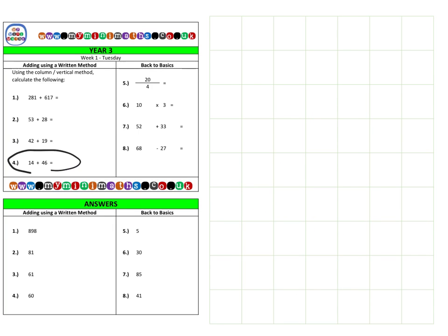And finally today, we're going to look at question four, which is fourteen plus or add forty-six. I'm going to place it into our columns again and break it down into our different columns. We have our units and our blue tens. So first of all, four add six is ten. So there's zero units and one ten when we add four and six together.